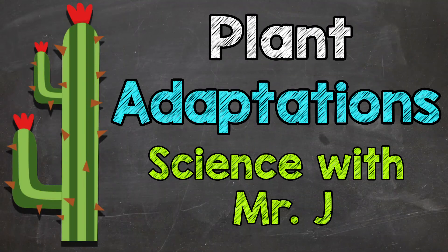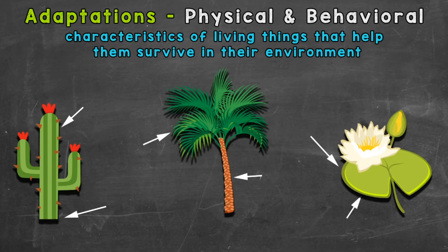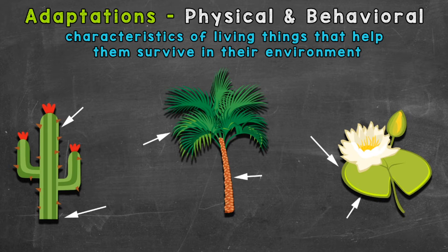Welcome to Science with Mr. J. In this video, I'm going to be covering plant adaptations. And remember, adaptations are characteristics of living things that help them survive in their environment. There are both physical and behavioral adaptations. Physical adaptations are physical features or parts of the living thing that help them survive, and behavioral adaptations are actions, behaviors, or even instincts that help that living thing survive.